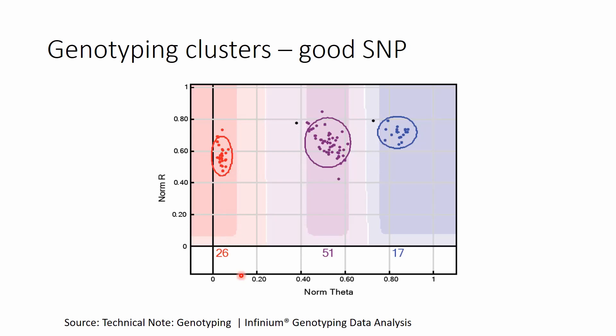This is an example of such a graph where we have the three genotypes: one homozygous, the other homozygous, and in between the heterozygous genotype. This graph is for one particular SNP, and each dot in the graph represents an individual. This is an example of a so-called good SNP, where the genotypes are quite well separated. The ovals here denote the location where the genotypes should fall, and with the darker shaded region, genotypes falling there are still accepted as such.